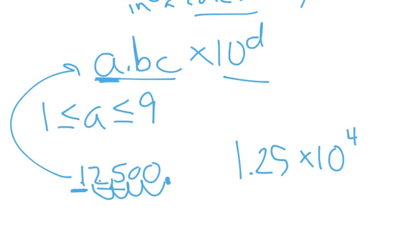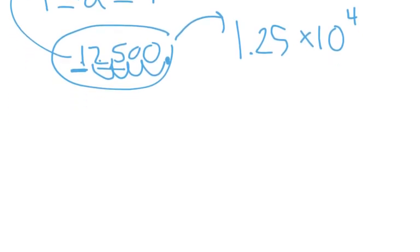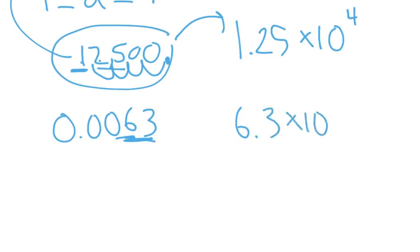And so we're taking a larger number and writing it in a more concise way. And the same works if we're dealing with small numbers. So let's consider 0.0063. So with this, we want to just focus on the 6 and the 3. 6 will become my a. So that's going to go in that a spot, 6.3. I'm going to be timesing it by some power of 10.